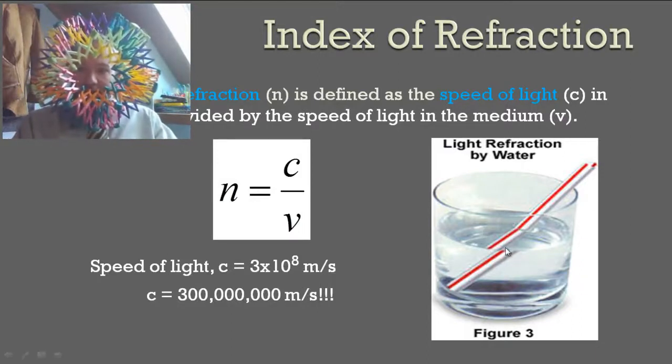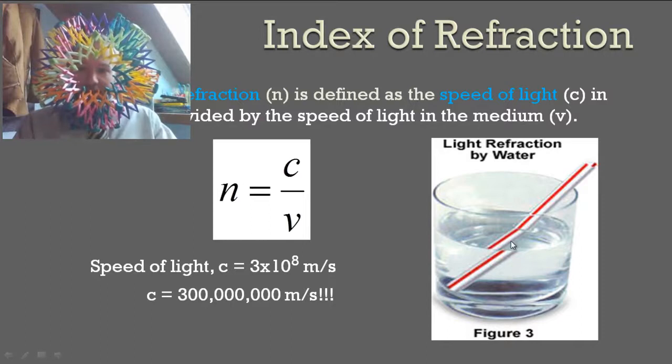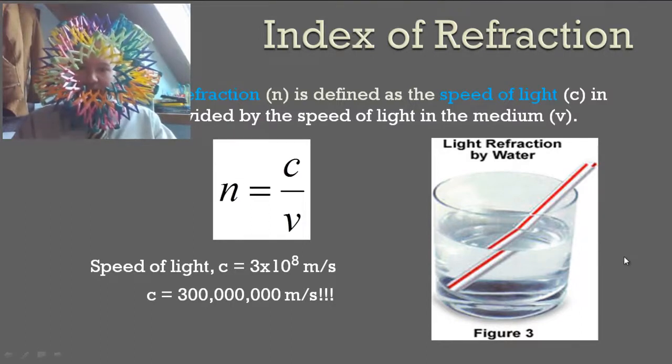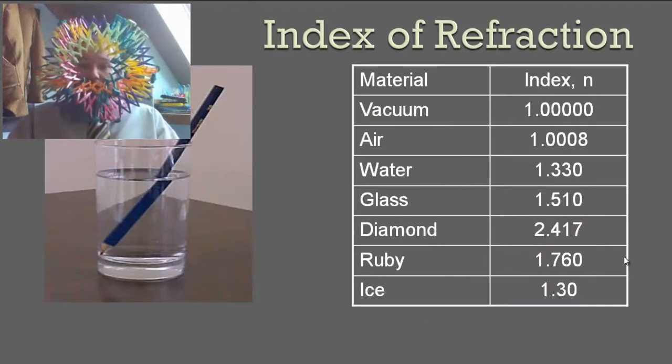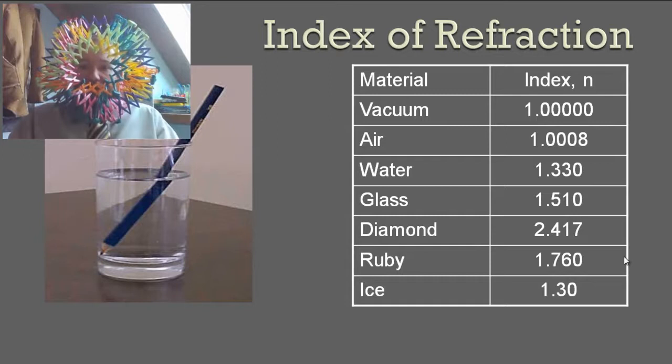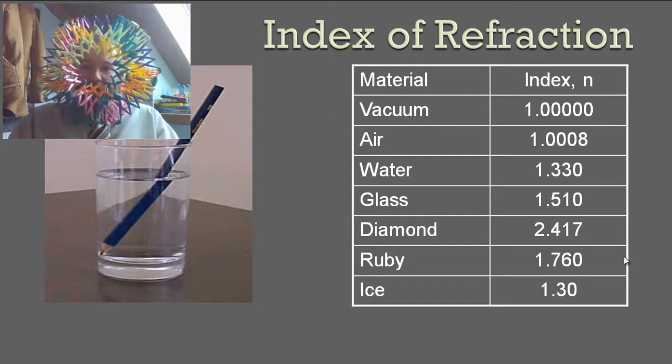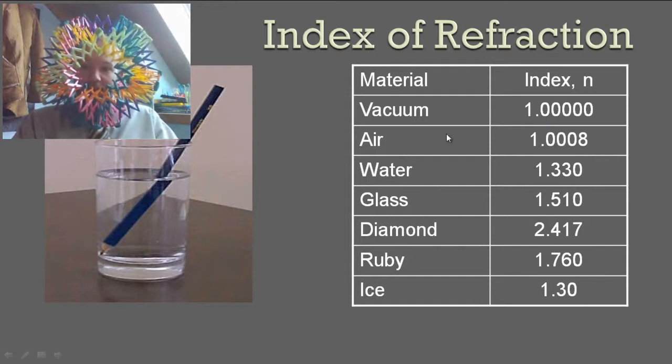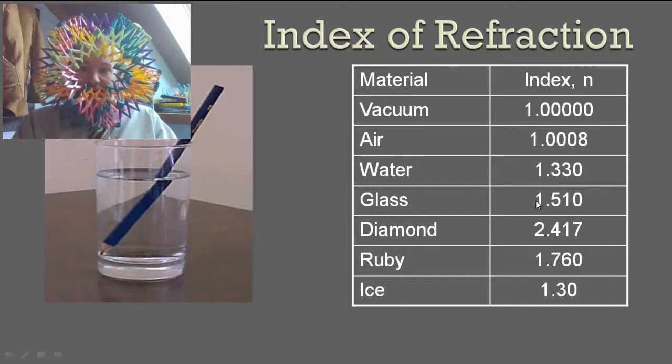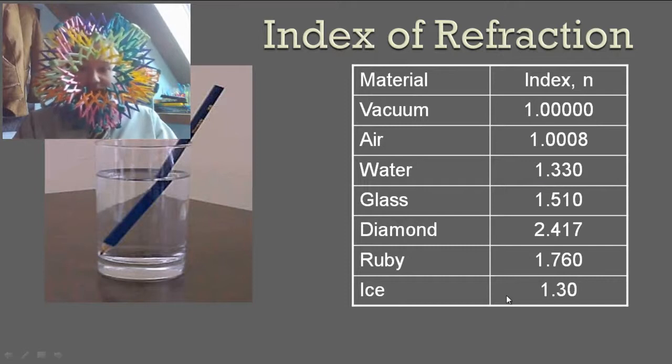We see this all the time. If you have a glass of water and stick a straw in it, you notice that it looks like it's cut in half and part of it shifted down. This is refraction at work. Here are a couple indexes of refraction that we'll be using in class material. In a vacuum, the index of refraction is 1. In air, it's slightly higher. Water, it's higher still. Glass, diamond, ruby, ice, etc.